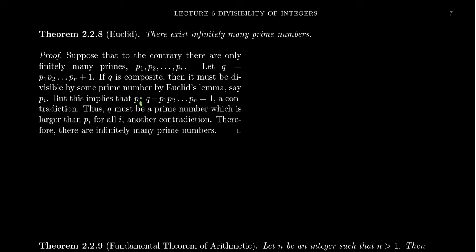We know pi divides q and pi divides the product of all primes because pi is one of them. It has to divide their difference, which is one. So pi divides one—that's a contradiction.